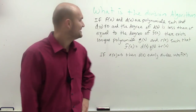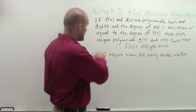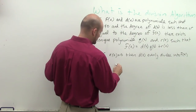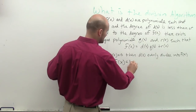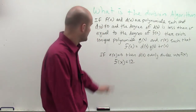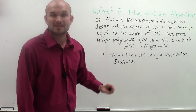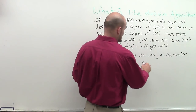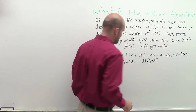So let's try to make this easy. Let's have f of x be a polynomial. And remember, f of x can be a polynomial like 12 — it's a constant polynomial. So f of x equals 12. Let's pick d of x, which we're going to call our divisor. Let's call d of x equal to 4.